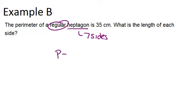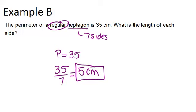So if the perimeter is 35, that means each side length will be the perimeter divided by how many sides there are. So 35 divided by 7, which is 5 centimeters. So each side would be 5 centimeters, so that all 7 sides added up would make 35 centimeters.